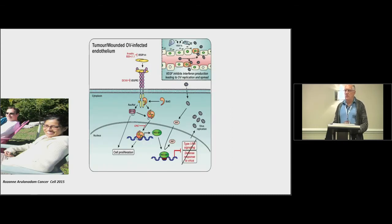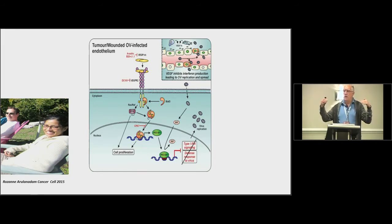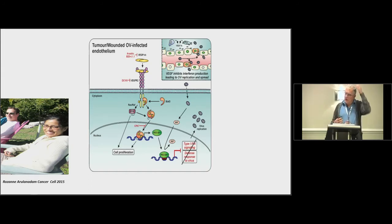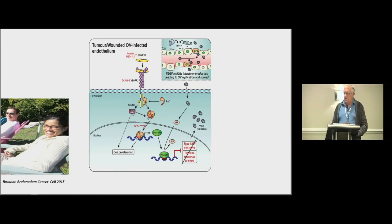A slightly different example: some normal cells can also be enhanced for oncovirus infection. Work done by Rosanne, a postdoc in my lab, showed a crosstalk between VEGF-activated pathways and interferon pathways. When you have a cut, you might want some angiogenesis and inflammation briefly. She showed that when VEGF binds to its receptor, it leads to proliferation of vascular endothelial cells as expected, but it also shuts down the interferon response through a transcription repressor called PRD1-BF1 or BLIMP1 that's turned on following VEGF activation — shutting down the interferon response within the vascular endothelial cell.